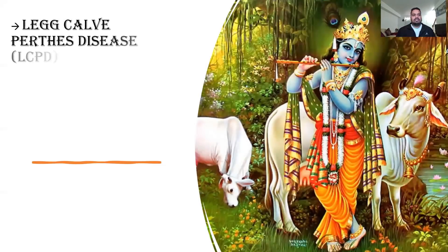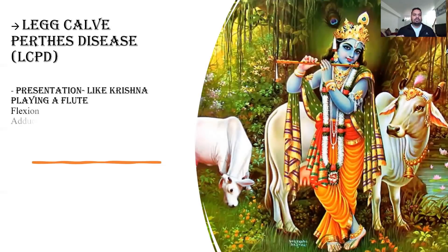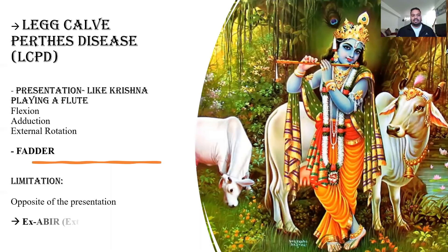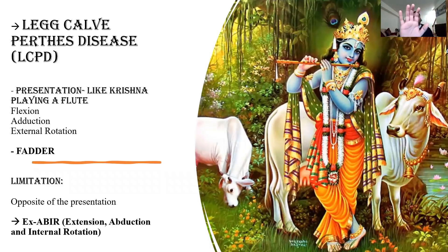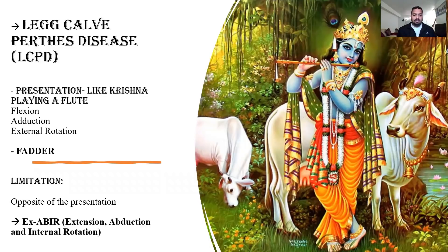Krishna plays a flute, and in Legg-Calvé-Perthes Disease the presentation is like Krishna playing a flute — the limb is in flexion, adduction, and external rotation. This presentation is also known as FADER: Flexion, ADduction, and External Rotation. So the child presents like Krishna, in flexion adduction and external rotation.